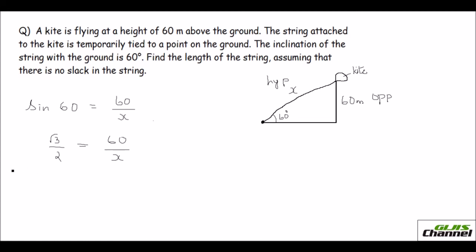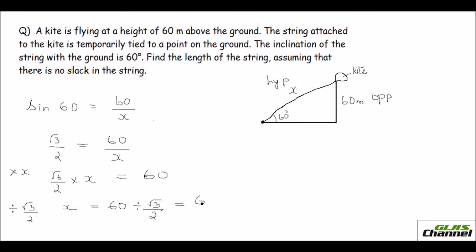Multiplying throughout by X: root 3 over 2 times X equals 60. Dividing throughout by root 3 over 2, I convert to multiplication and flip the fraction to get 2 over root 3. So X equals 60 times 2 over root 3, which is 120 over root 3. You can rationalize or use the calculator to find the value.